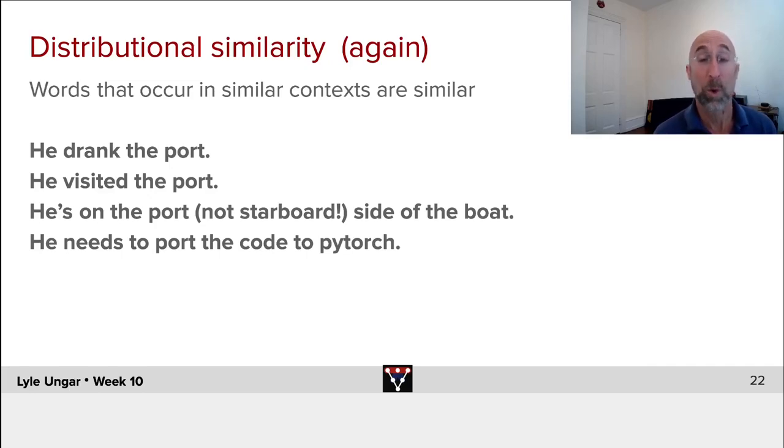Now note that this works sometimes and doesn't work other times. Think, for example, he drank the port. What would the embedding, the context-sensitive embedding of port tell us? Well, it's something you can drink, like maybe a kind of wine. He visited the port. That's different.